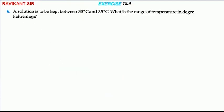The solution is kept between 30 degrees Celsius and 35 degrees Celsius. What is the range of temperature in Fahrenheit? We know that the conversion from Fahrenheit to Celsius is C = 5/9(F - 32).